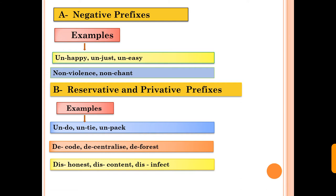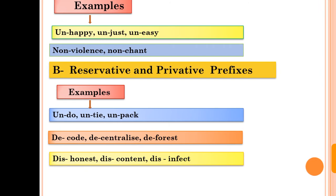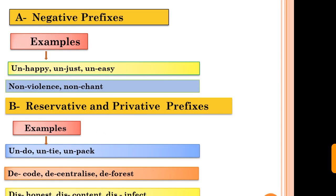Now here is the second type, reservative or privative prefixes. These are un, de, and dis. Do, undo, code, decode, honest, dishonest. This gives the opposite meaning. It's called reservative or privative prefixes.